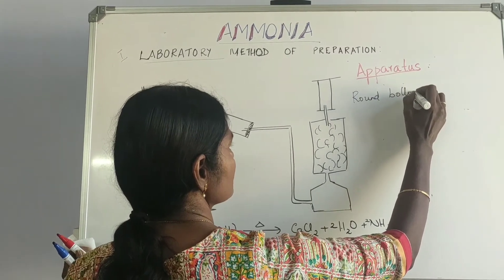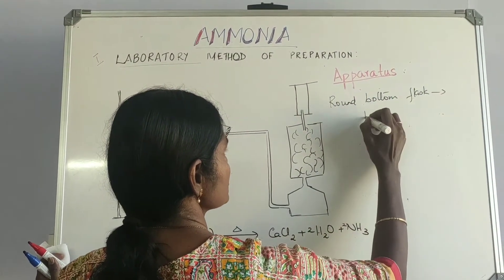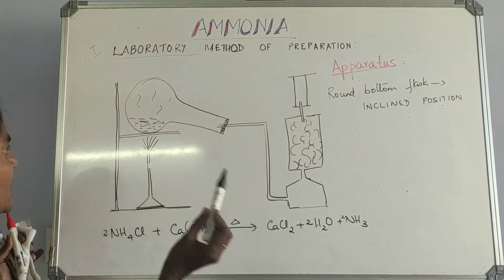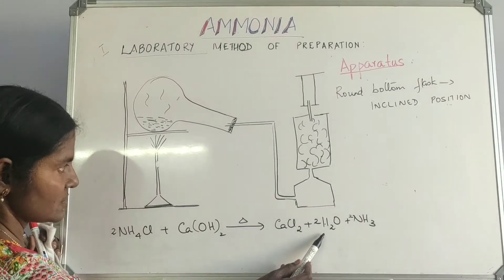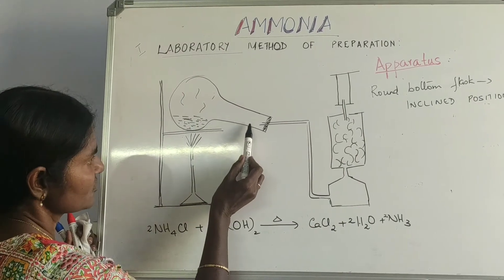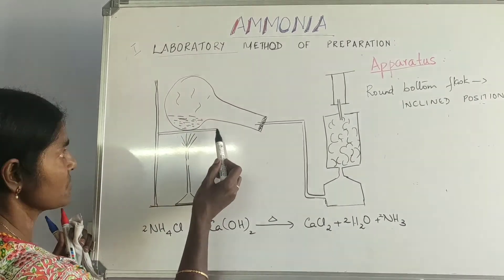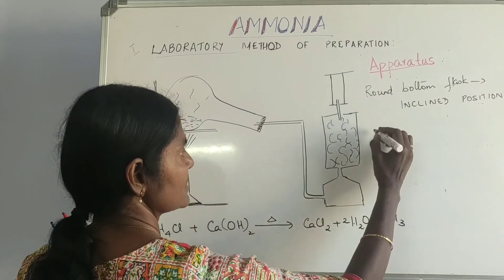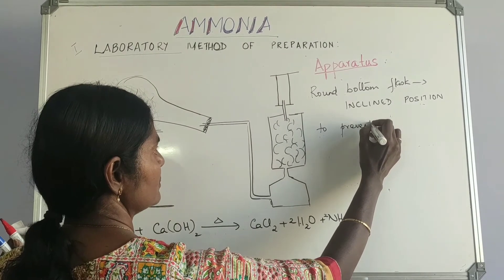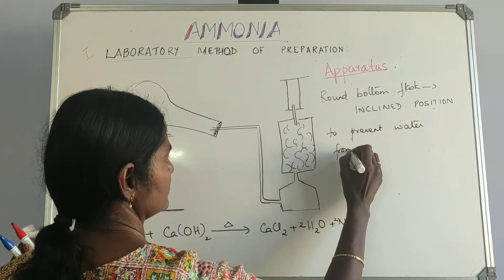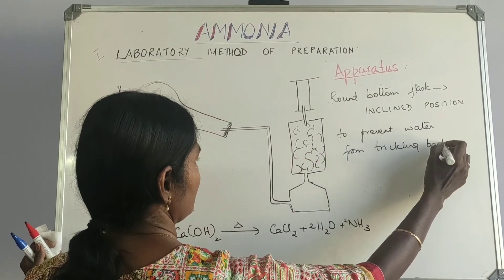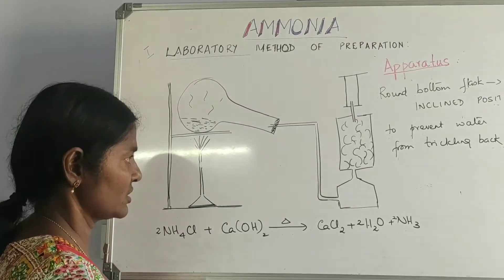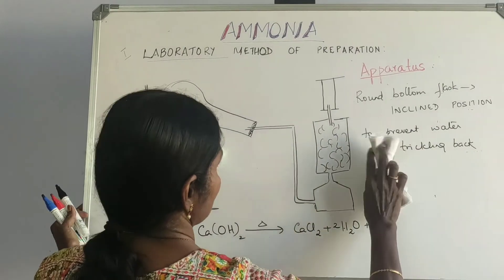The round bottom flask is in an inclined position. Why? Because we are heating this mixture and one of the products formed is water, which also appears as vapor. As the vapor travels down the tube it can cool and trickle back. Since the apparatus is made of glass, if hot water trickles back it will break the apparatus. So the flask is inclined to prevent water from trickling back. Ammonia is also highly soluble in water, so we need to take certain precautions.